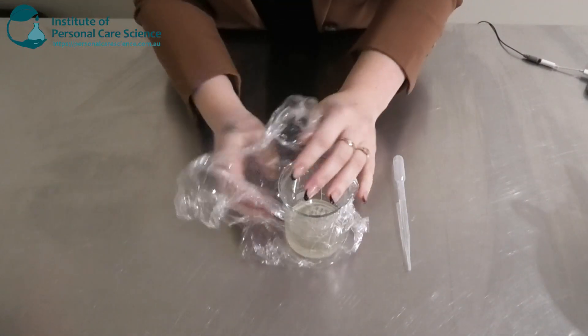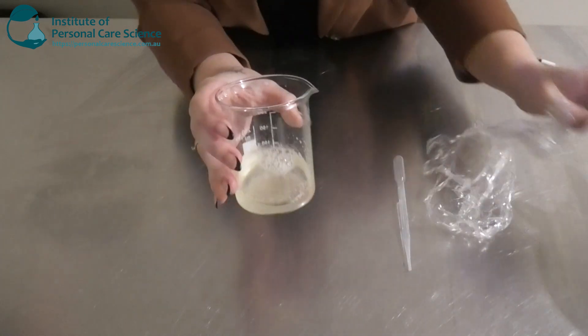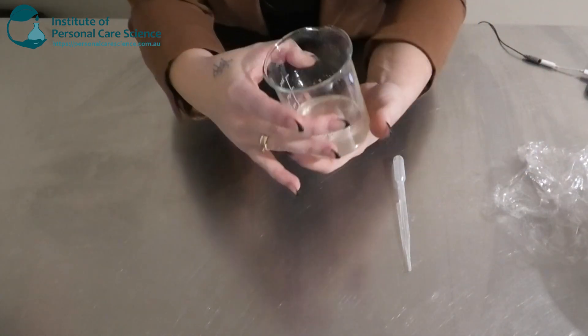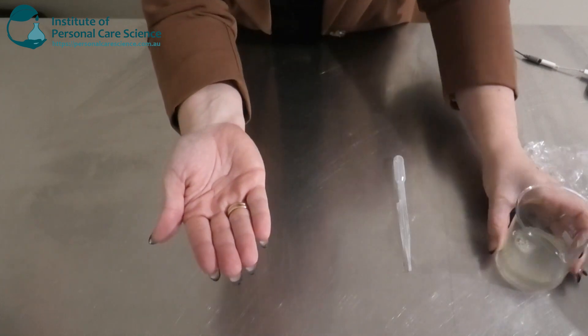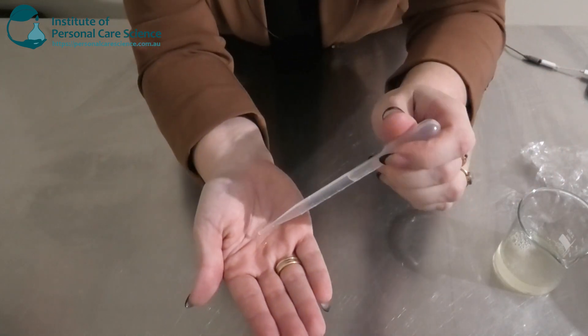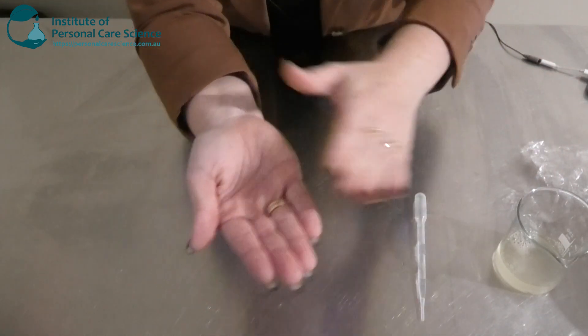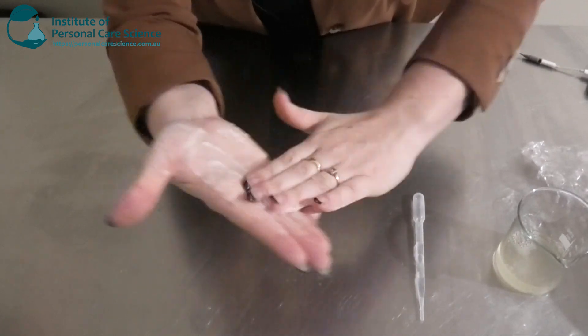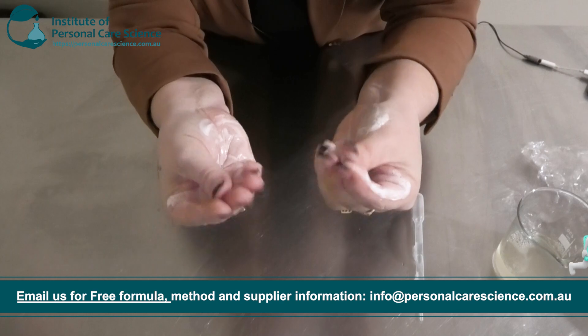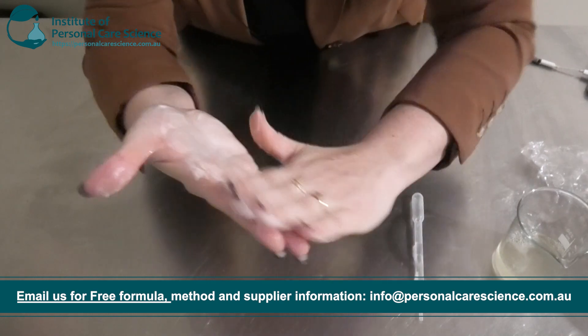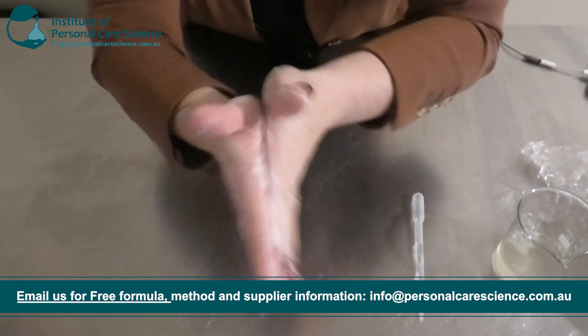Here is what my body wash concentrate looks like the next day. As you can see, it's thickened up quite a bit. I'm just going to put a little bit in my hand and add some water to it. It's foaming up really nicely, it's really smooth, and it's got really good slip to it.